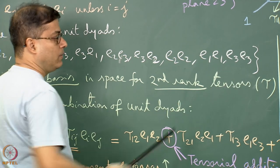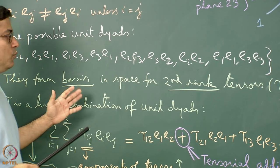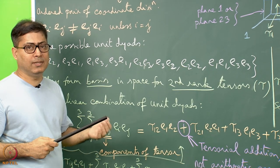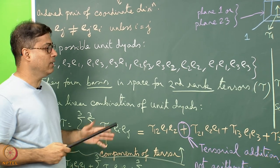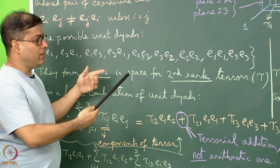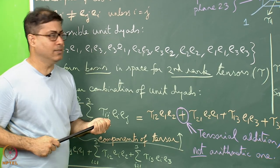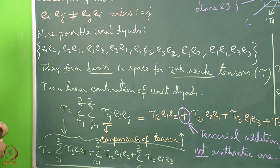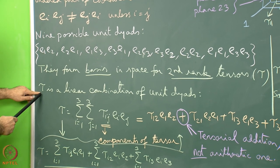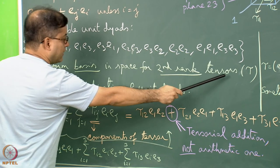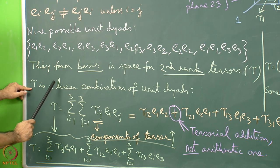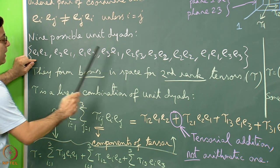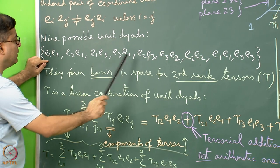We can call the second rank tensor tau. There is nothing to be afraid about — this is the definition, and I will link it with natural examples so it will be clear. The second rank tensor tau will be presented as a linear combination of the unit dyads.